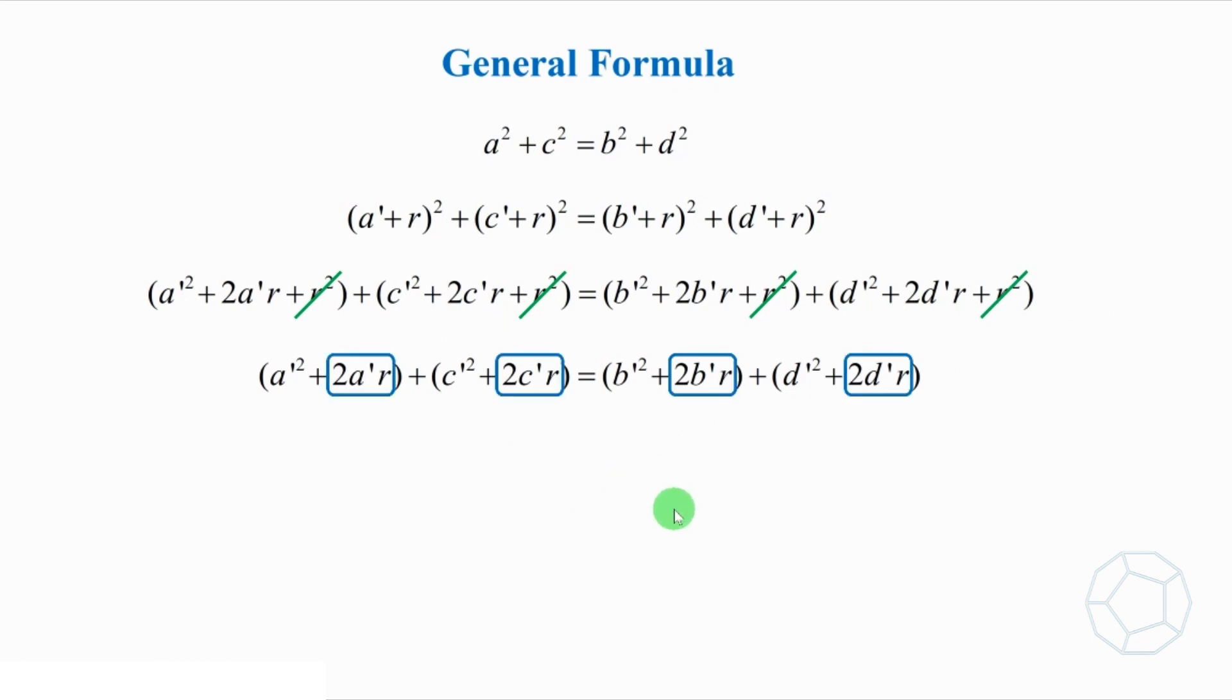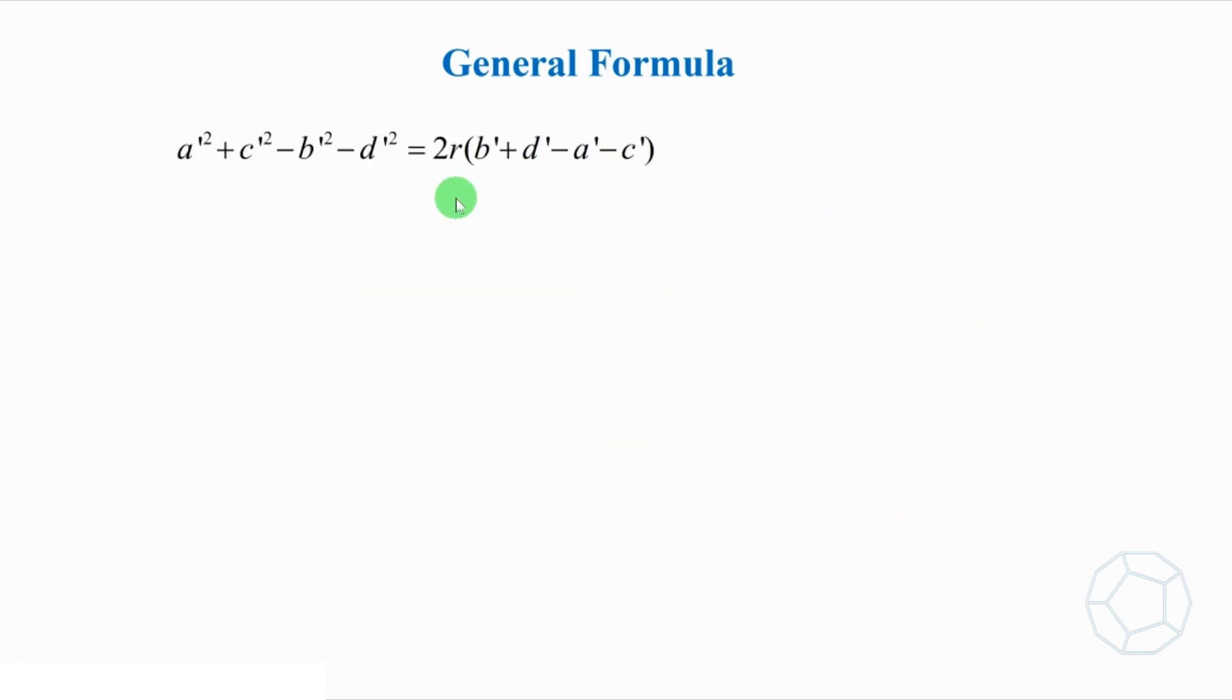Then, we have much less terms to handle. Let's put all the terms with r together. The four square terms are put on the other side. You see, there is a common factor 2r on the right-hand side. Let's take it out.